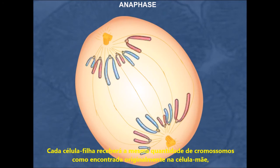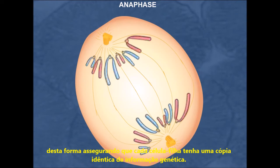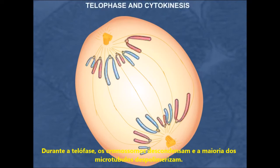Each daughter cell will receive the same complement of chromosomes as was originally found in the mother cell, thus assuring that each daughter cell gets an identical copy of genetic information.